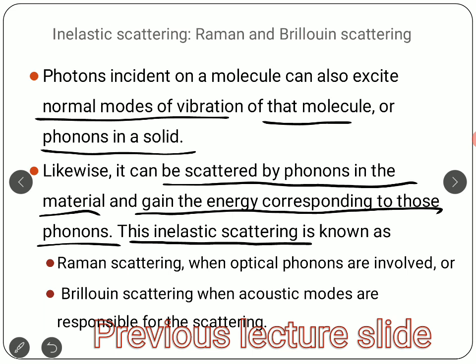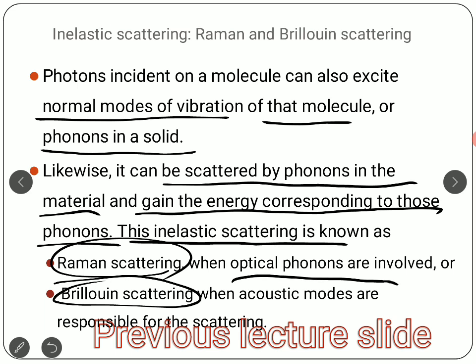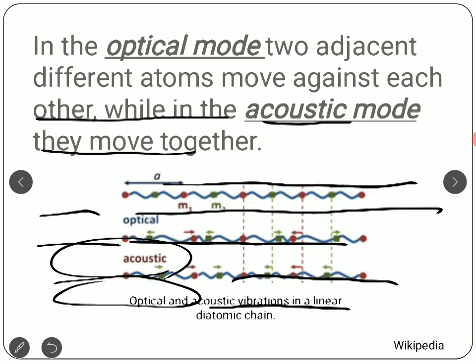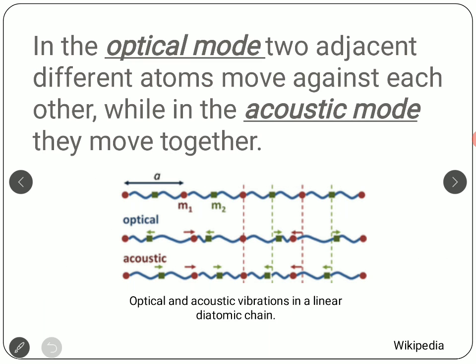In inelastic scattering there are two types: Raman scattering and Brillouin scattering. In Raman scattering, optical phonons are involved, while in Brillouin scattering, acoustic modes are responsible for the scattering. We have seen this in the last lecture, and we are going to discuss a brief overview from a quantitative point of view without going into mathematical detail.